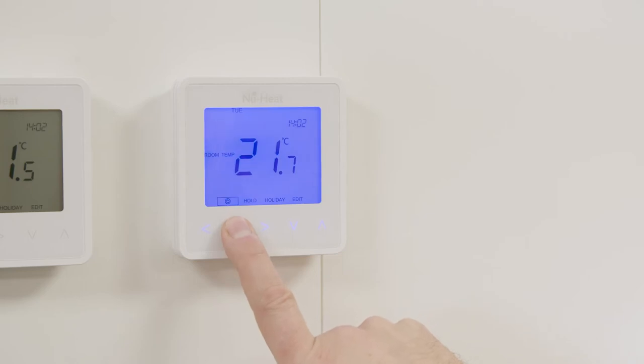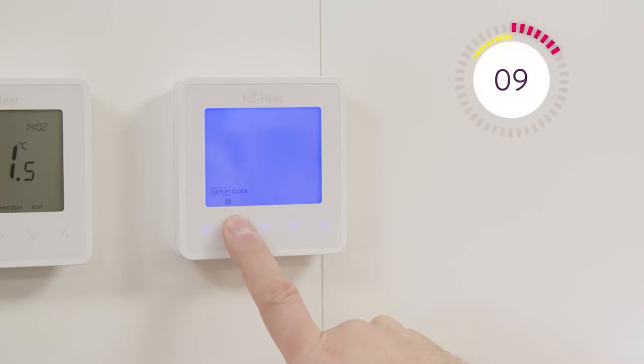Use the arrow keys to scroll to the power icon, press and hold the tick key for three seconds. Setup will now be highlighted. Now press and hold the tick key for 10 seconds.